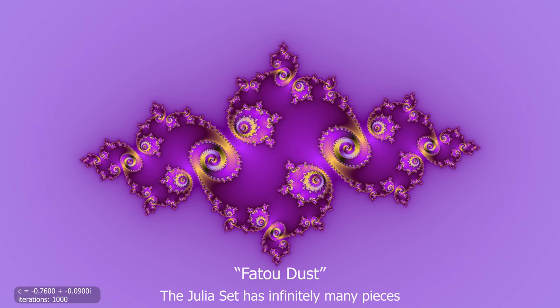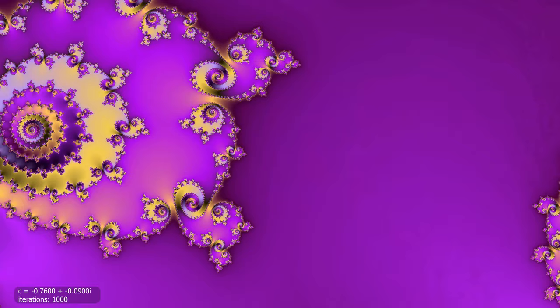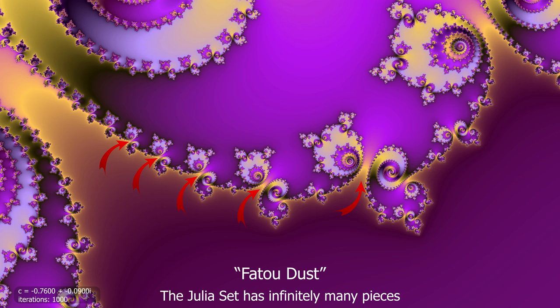The other type of Julia set is simply dust. It is broken into infinitely many small pieces. We don't find Julia sets that are broken only into a couple of pieces. They are always whole or they are dust.